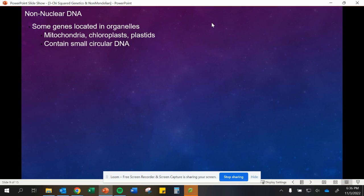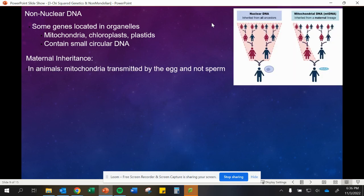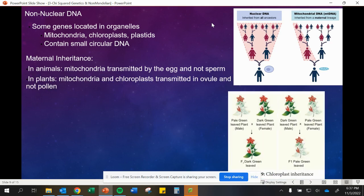In animals, mitochondria is transmitted by the egg only and not the sperm. If we ever see an inheritance where it's always passed down to the female but never passed down to the male, we can kind of conclude it could be because it's from the mitochondrial DNA and not from the nuclear DNA. In plants, mitochondria and chloroplasts are transmitted in the ovule and not the pollen. Same idea is that it's going through the female and not the male plant.